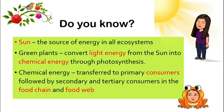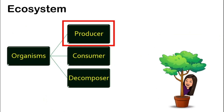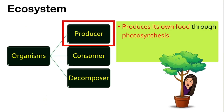In an ecosystem, all the organisms can be classified into three main groups: the producer, consumer, and also the decomposer. The producers are the ones that produce their own food through photosynthesis. So the producers are actually green plants.